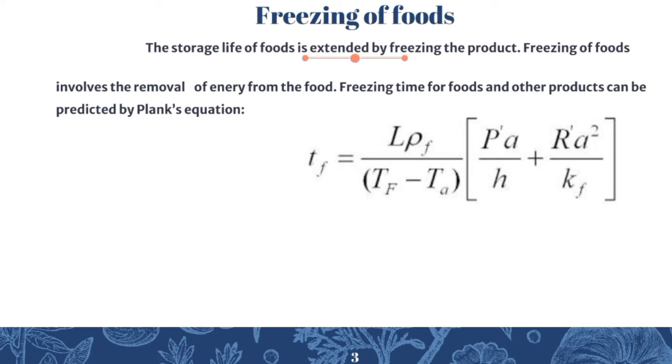Freezing time for foods and other products can be predicted by Plank's equation. In Plank's equation, small tf is the freezing time in seconds, capital Tf is the freezing temperature of the food product, Ta is the temperature of cooling medium, a is the thickness of slab or diameter of cylinder or sphere, k is thermal conductivity, and lambda or L is latent heat of freezing.